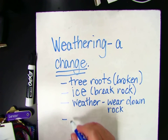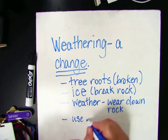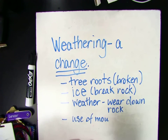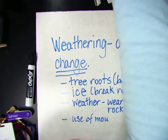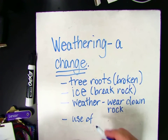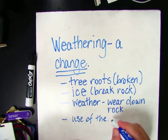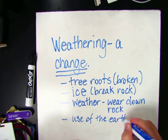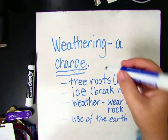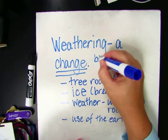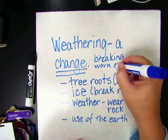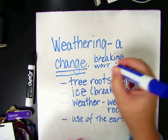Animals and humans' use of the earth can also wear it down. If we walk across it, or animals walk across it, it gets worn down. So a change can consist of rock breaking or getting worn down from weather.